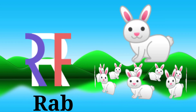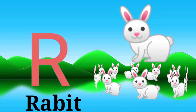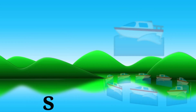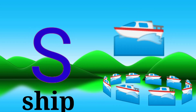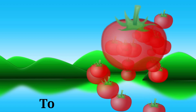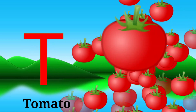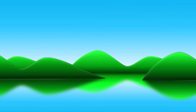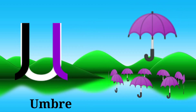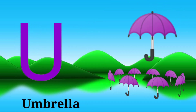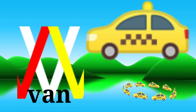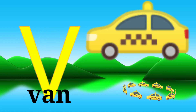R for rabbit, S for sheep, T for tomato, U for umbrella, V for van.